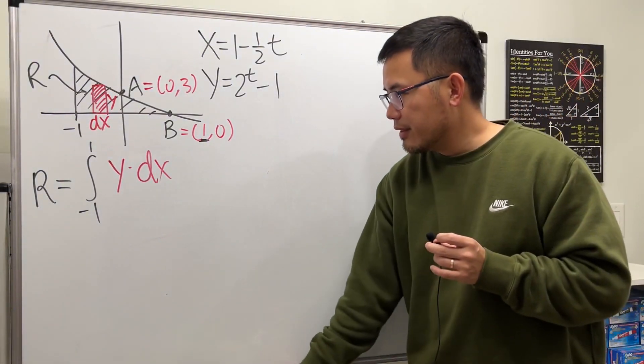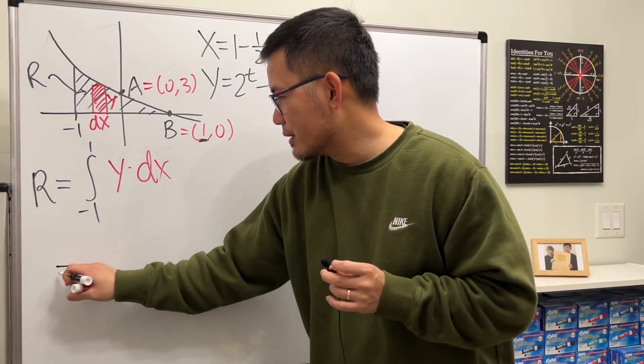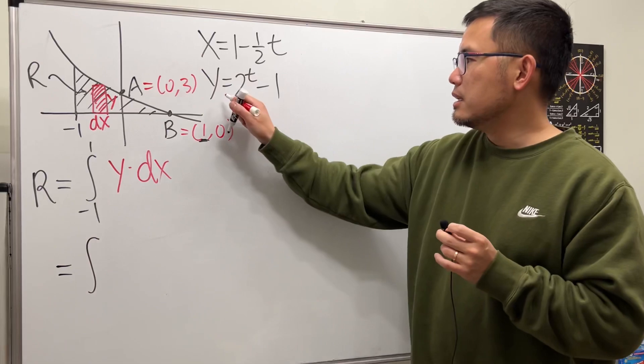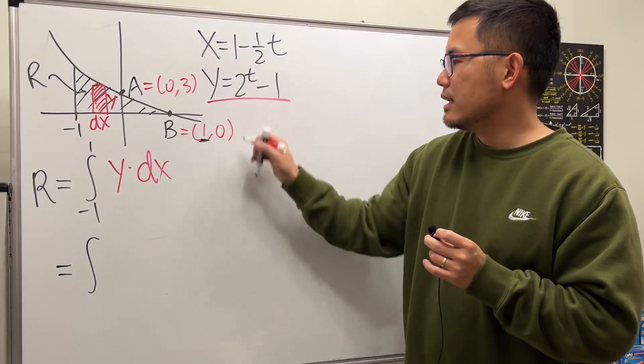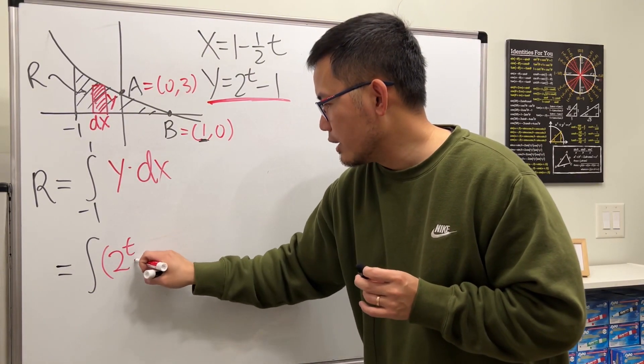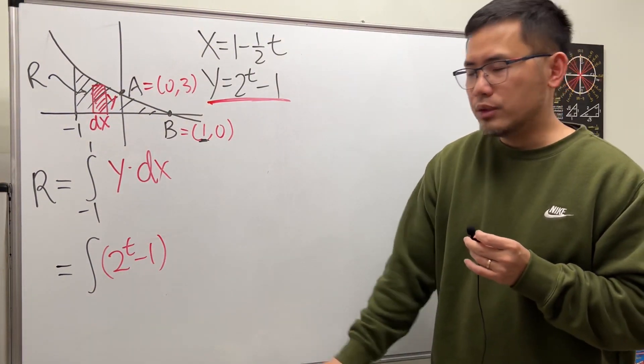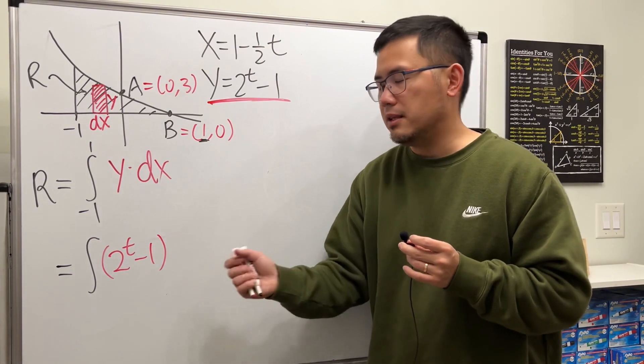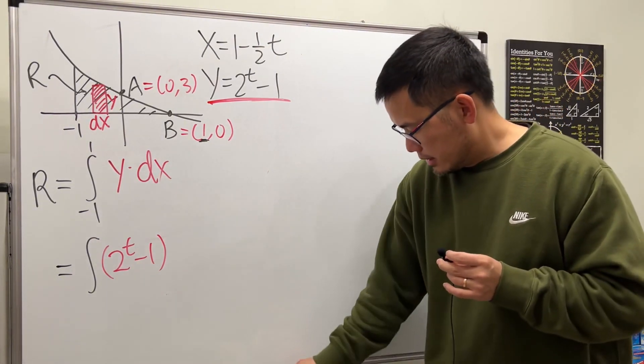This is how. It's not that bad. Let's just put down the integral first. y is this, so here we have 2^t - 1. Let's just go ahead and write that down. You see that we are using t, so make sure later on we also have dt. And that's this part right here.